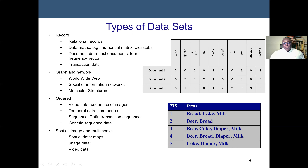Video data is a sequence of images — video is like taking pictures and letting them move in sequential order. We also have sequential data, such as transaction sequences. We can do an association analysis to find if any items go together. For example, analyzing five customer transactions, we might say that any time a customer buys bread, there's maybe a 60% or even 100% chance they may also buy milk or Coke. This is sequential transaction analysis.